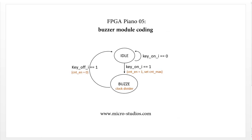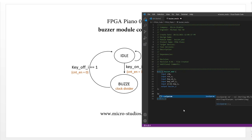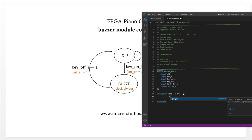We only have two states: idle and buzzer. We use local parameters to define them. Idle is a 2-bit value defined first, and the second state is buzzer.